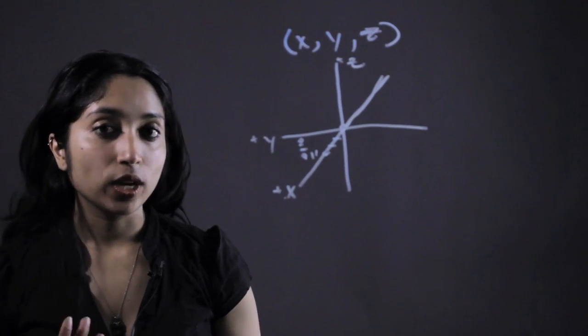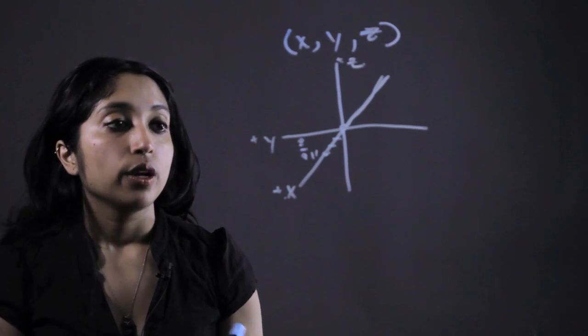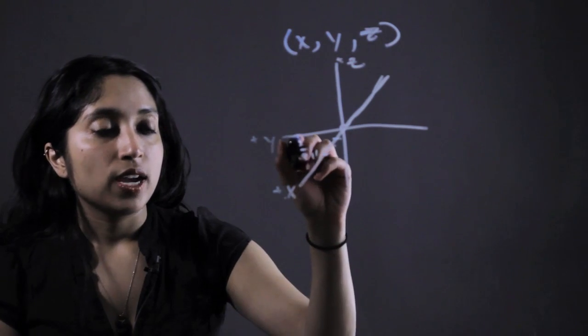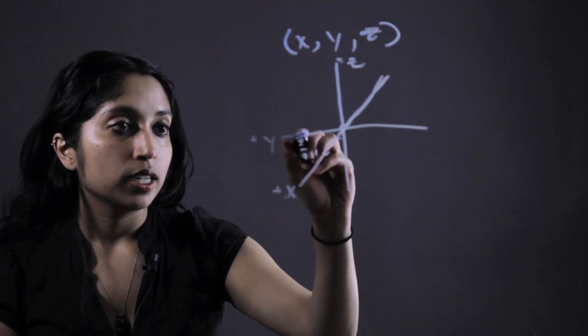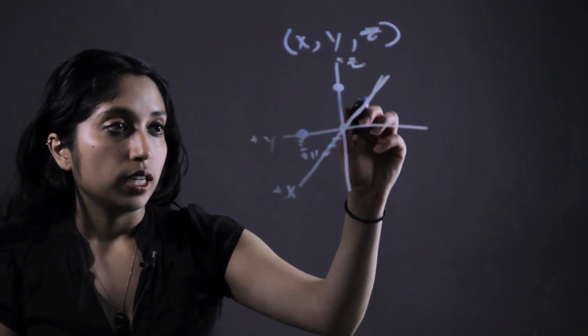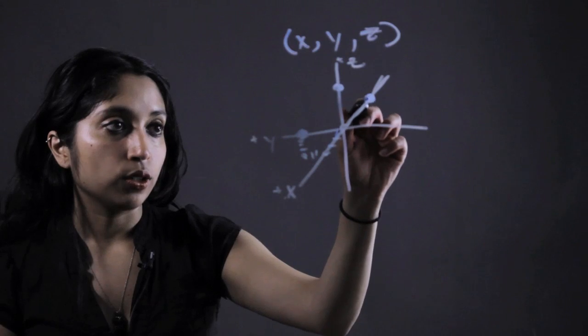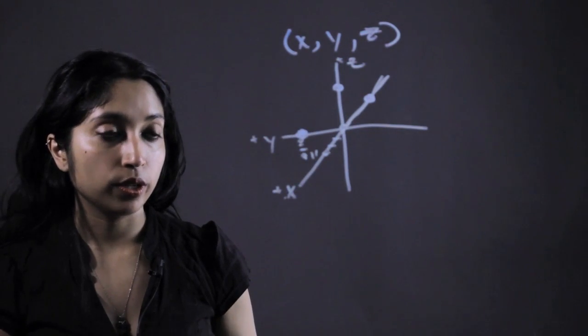Now when we're graphing an equation, what we're going to want to do is find the intercepts on the y, the z, and the x-axis if we're trying to graph a three-dimensional linear equation.